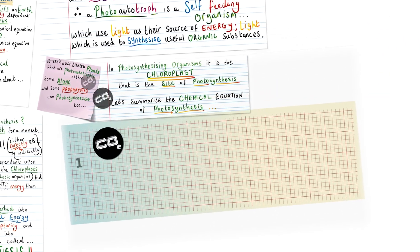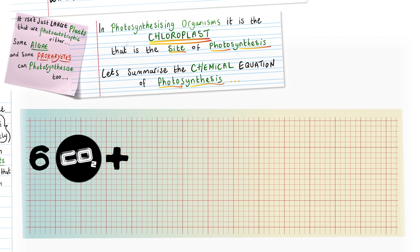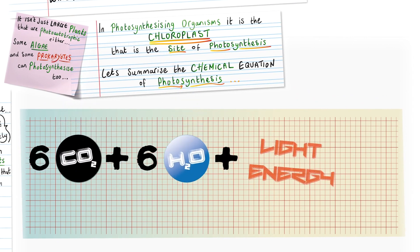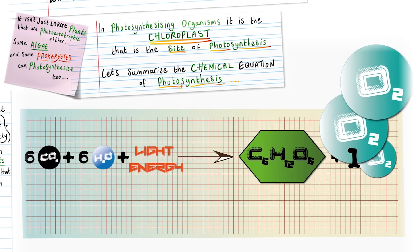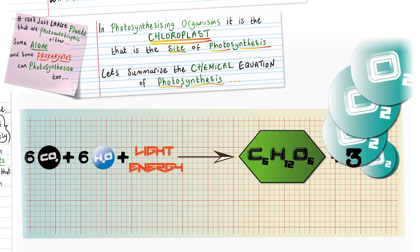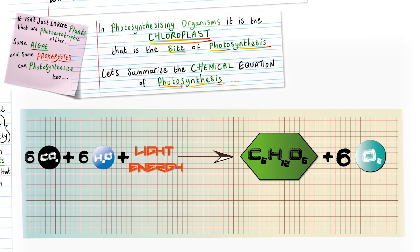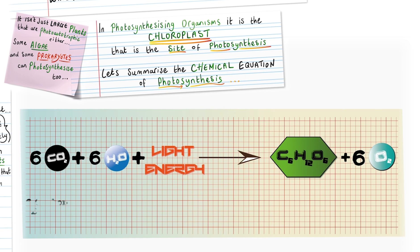Here we have six carbon dioxide molecules, plus six molecules of water, and of course light energy. The reaction is catalyzed by the photosynthetic reactions to give us a molecule of glucose and six molecules of oxygen. Now don't forget, you must be able to write this reaction down.